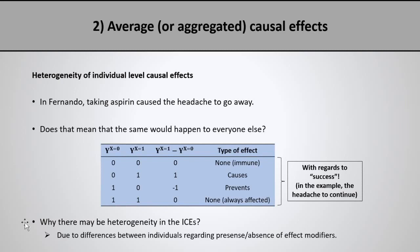Why may there be heterogeneity in individual level causal effects? This is actually not very surprising. In epidemiology we often discuss the concept of effect modification or interaction. Essentially, in some individuals certain effect modifiers will be present and in others different effect modifiers will be present, causing individual level causal effects to differ — both between individuals in the same population if we're talking about individual level effect modifiers, or between two populations if we're talking about population level or contextual effect modifiers.